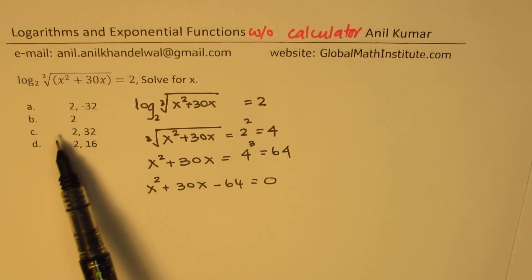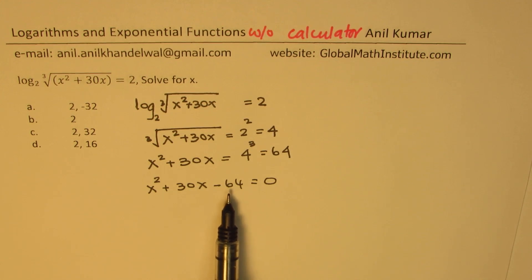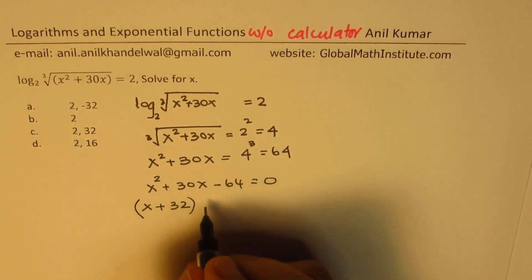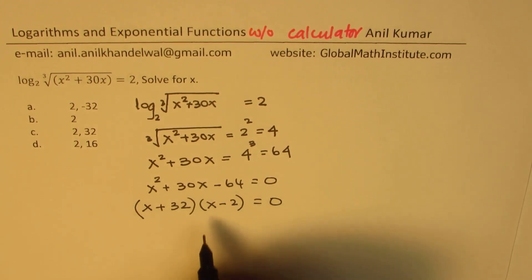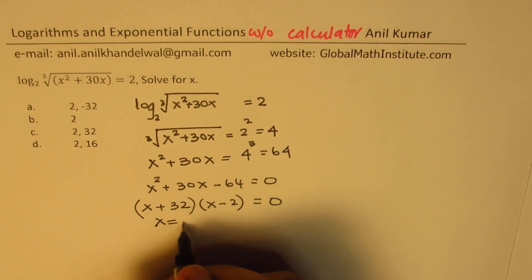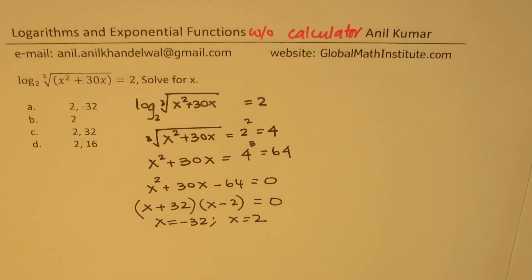For this multiple choice question, the given options suggest 2, 32, and 16 as possible solutions, which hints that 64 can be written as 2 times 32. So we factor as (x plus 32)(x minus 2) equals 0, giving two solutions: x equals minus 32 and x equals 2. We have part A as our solution.